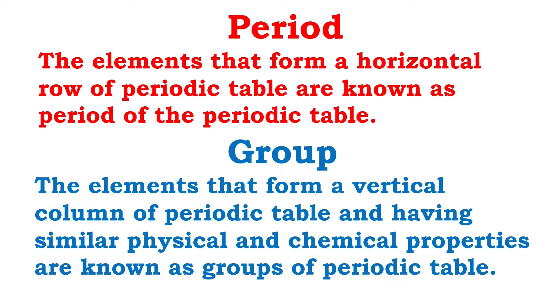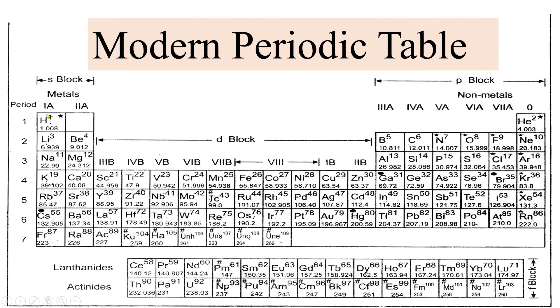Today's focus is on what happens to the reactivity, metallicity, and non-metallicity of an element as we go towards the right hand side in a period. In case of group 1a, the atoms of each of the elements contain only 1 electron in its outer shell. In case of 2a, atoms contain 2 electrons; 3a contains 3 electrons; 4a contains 4 electrons.